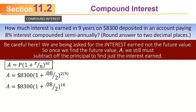If you got $160,000, that would be a red flag. But the question asked for the interest, not the amount in the account. You took $8,300 and turned it into $16,814.28. So the amount of interest earned is the difference between those two numbers. Had they asked for the future value, the answer would be $16,814.28; but because they only asked for the interest earned, you subtract the principal: $16,814.28 − $8,300 = $8,514.28.